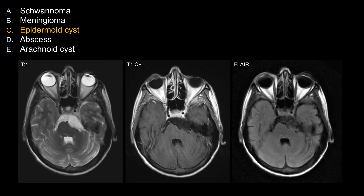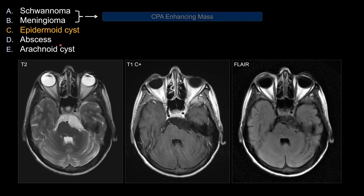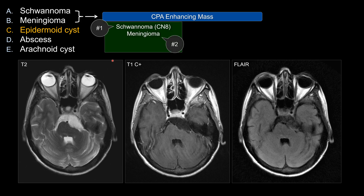Let's look at the other potential choices that do not work as well in this case. The first two — schwannoma and meningioma — both should show quite avid enhancement. So if you are considering CPA-enhancing mass lesions in your differential, your top two lesions should be schwannoma, specifically vestibular schwannoma, versus meningioma.